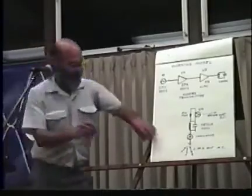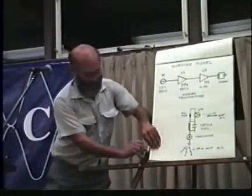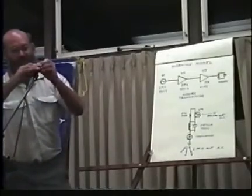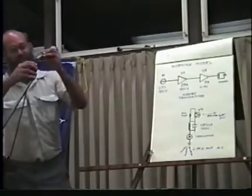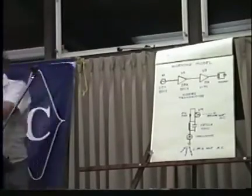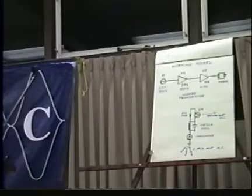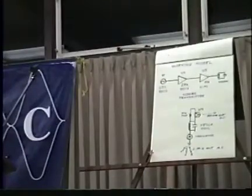It's called the one-handed electrician syndrome. What we have here is a number of demonstrations. This is a model of the Tesla transmission system and the diagram up there shows basically what's happening.